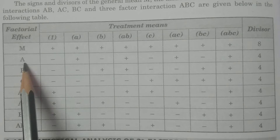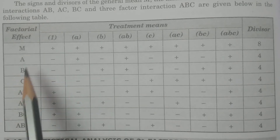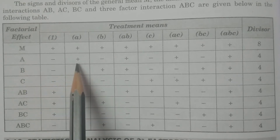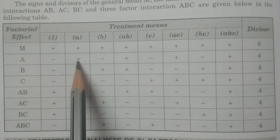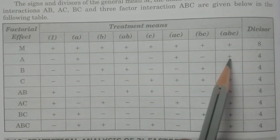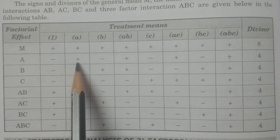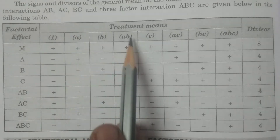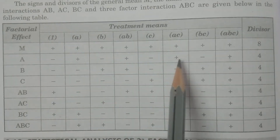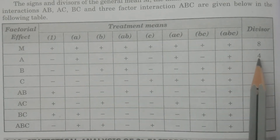For factorial effect total, for main effect A — there are 3 main effects: A, B, C. For main effect A, observe here: A, AB, AC, and ABC are having the positive sign. So all treatments containing A have the positive sign, and the remaining — 1, B, C, BC — are minus. Divisor is 4.